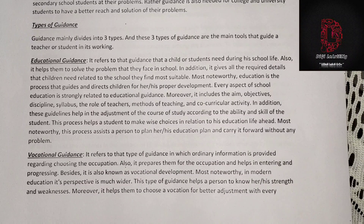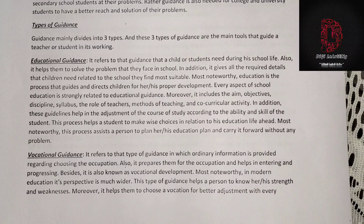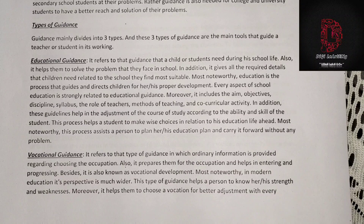Educational guidance gives all the required details that children need related to the school they find most suitable. Education is the process that guides and directs children for their proper development. Every aspect of school education is strongly related to educational guidance. It includes the aims, objectives, discipline, syllabus, the role of teachers, methods of teaching, and co-curricular activities. These guidance help in adjustment of the course of study according to the ability and skill of the student. This process helps a student make wise choices in relation to their education life ahead.